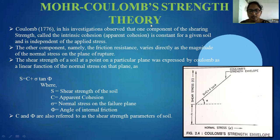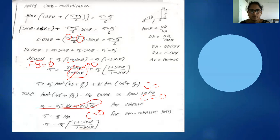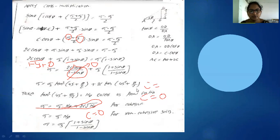In previous classes, we have already discussed Mohr-Coulomb Theory — the Failures Theory. That is: sigma 1 is equal to sigma 3 into N_phi plus 2c times the square root of N_phi. Here we can substitute N_phi in place of (1 + sin φ) / (1 − sin φ).